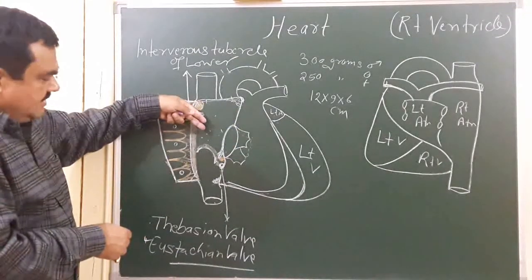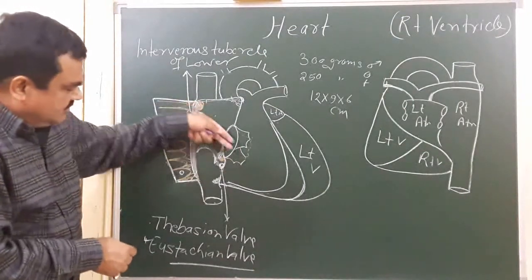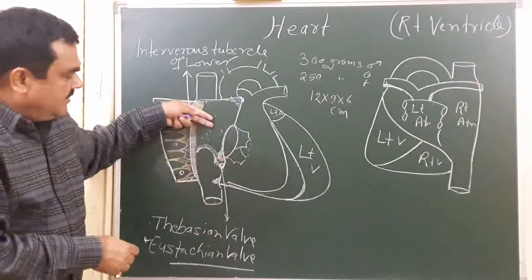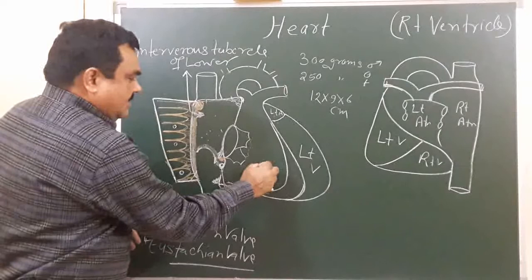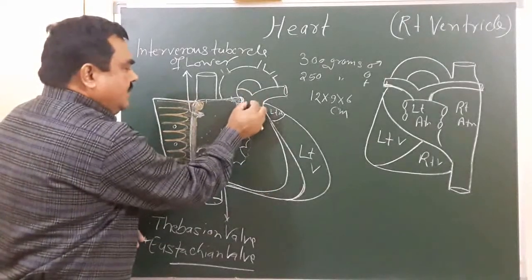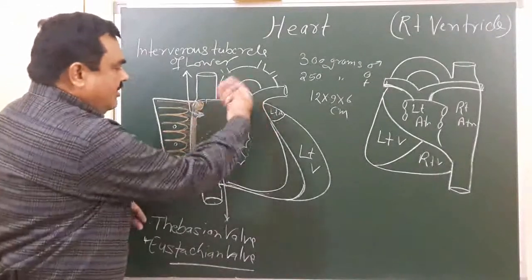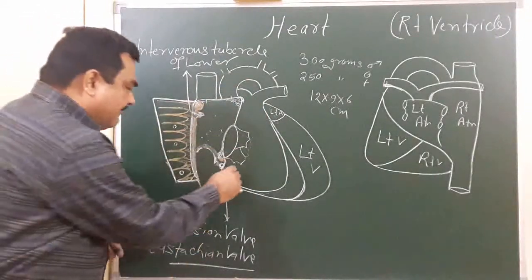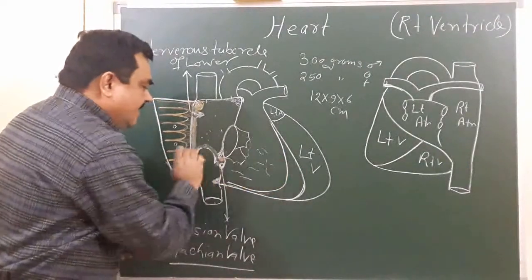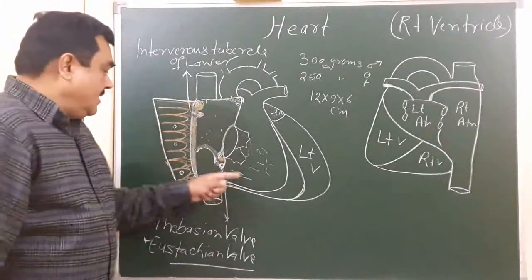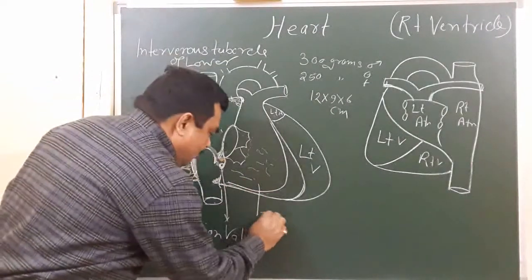One part is the inflowing part — blood passes through this and enters the chamber. This is the inflowing part, and this portion is the outflowing part. The inflowing part is rough. This roughness is due to trabeculae carneae. This muscle is known as trabeculae carneae.